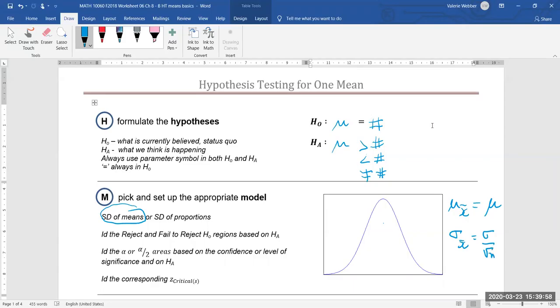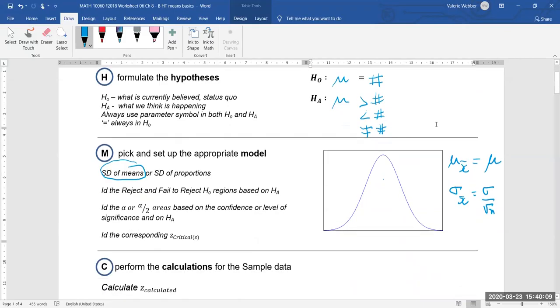And we're going to have to set up our model with the reject and fail to reject H naught areas based on our desired alpha level, our significance level, or our confidence level if that's how somebody's written it.